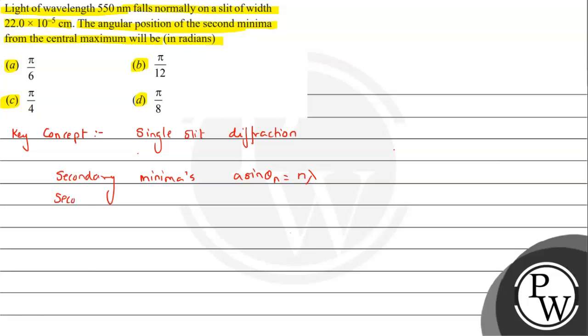The condition is a·sinθₙ equals integral multiple of λ. This is the minima condition. If we talk about secondary maxima condition, the path difference which is a·sinθₙ should be (2n+1)λ/2.